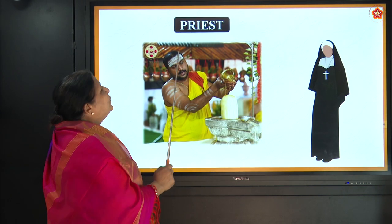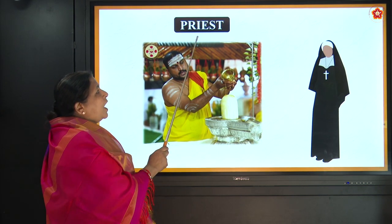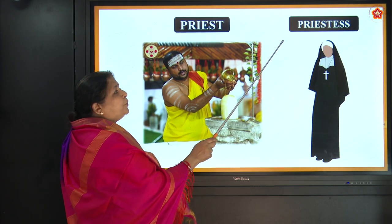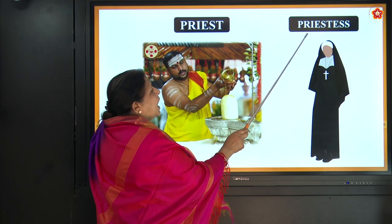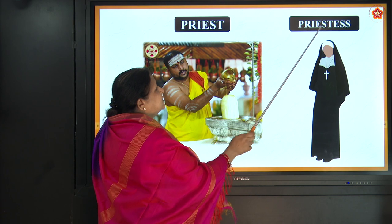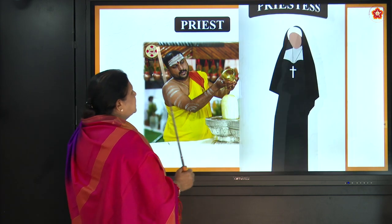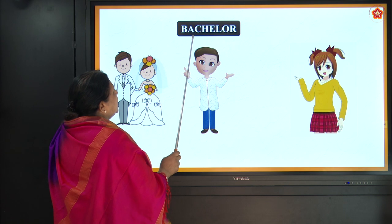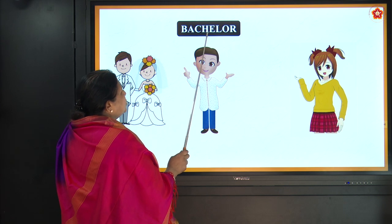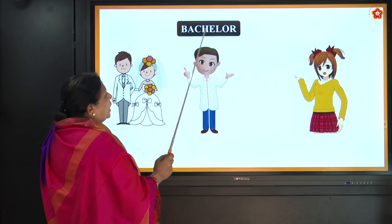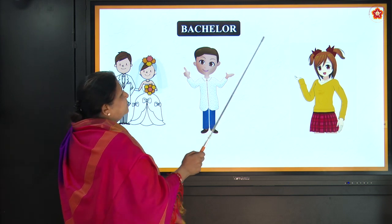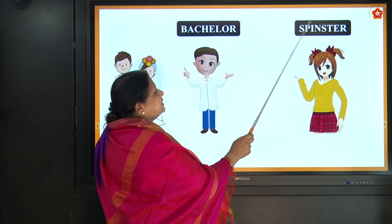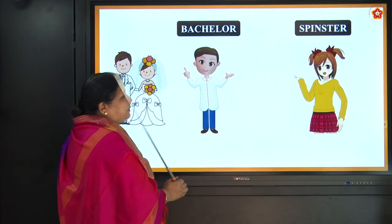Then priest, P-R-I-E-S-T, and priestess, P-R-I-E-S-T-E-S-S. Then we have bachelor, B-A-C-H-E-L-O-R, and spinster, S-P-I-N-S-T-E-R.